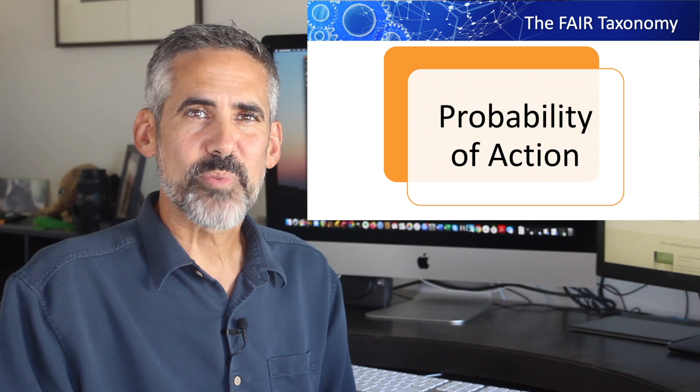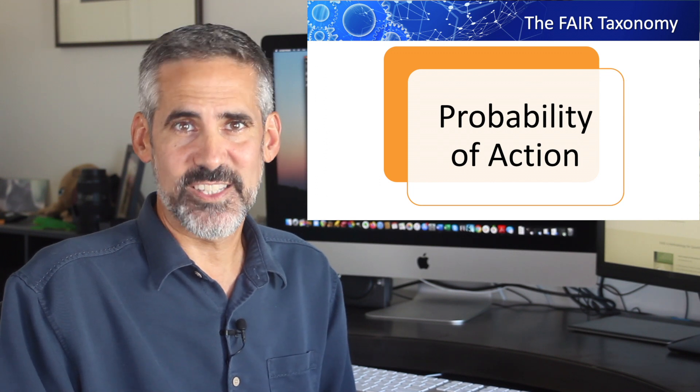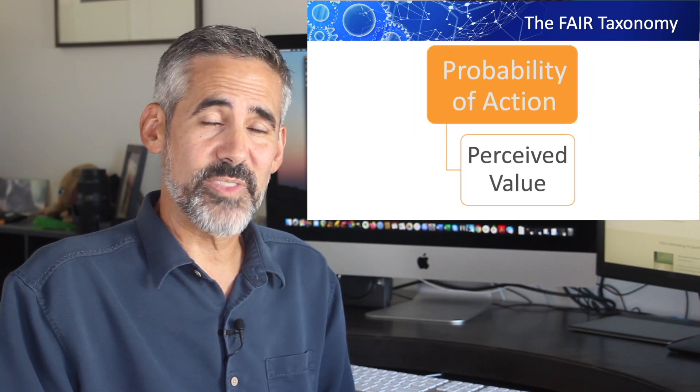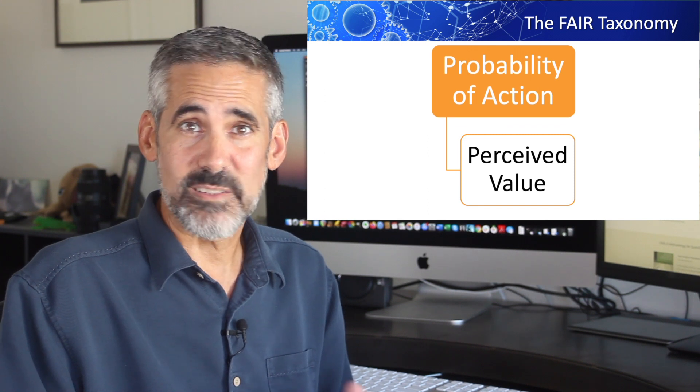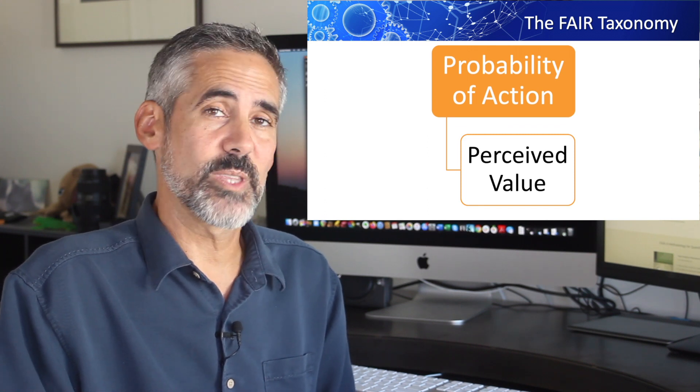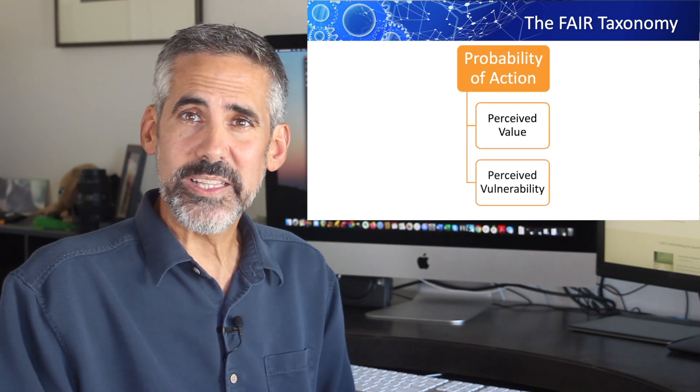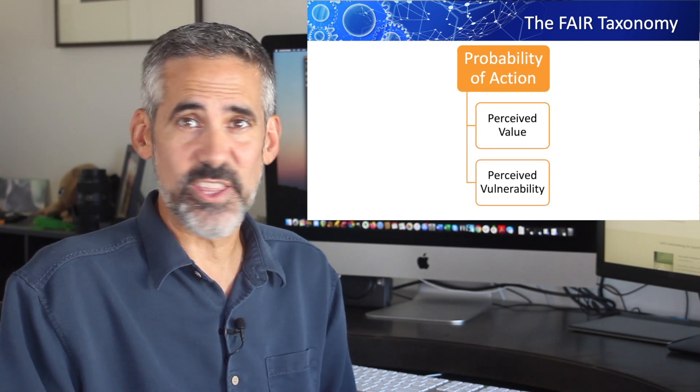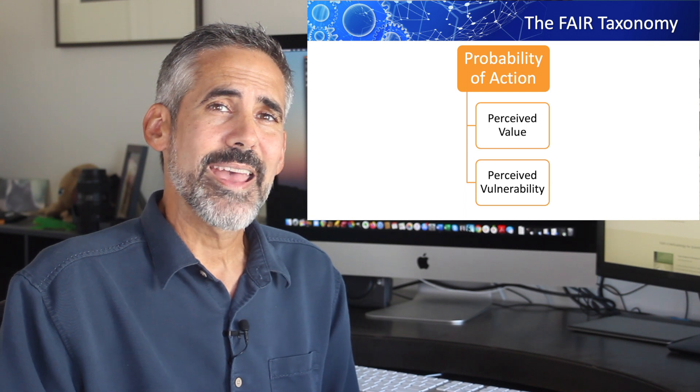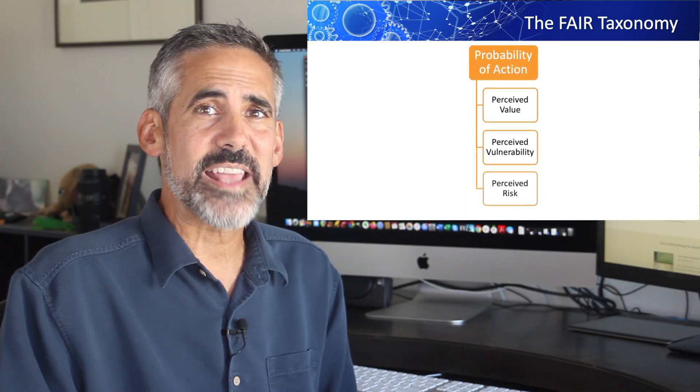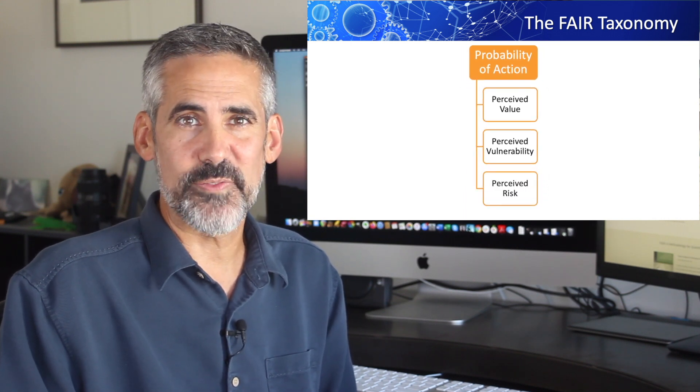When thinking about probability of action, there are three things to consider. The perceived value of the asset to the threat is what they're accessing worth anything to them. The perceived asset vulnerability, how weakly protected is the asset related to the threat's capabilities. And the perceived risk, how likely are they to get caught or otherwise suffer from taking action.